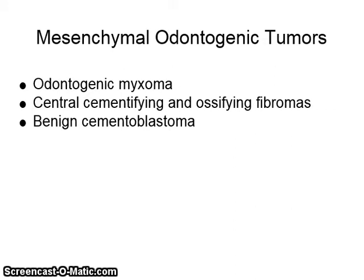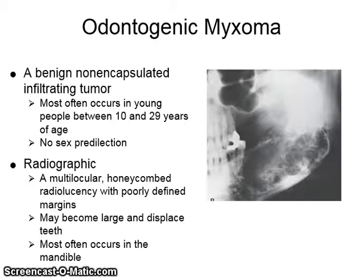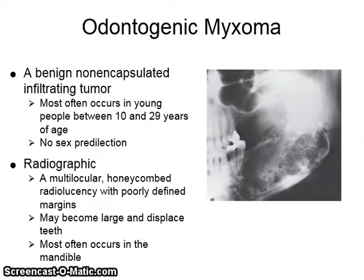Mesenchymal odontogenic tumors include odontogenic myxoma, central cementifying and ossifying fibromas, and benign cementoblastoma. Odontogenic myxoma is a benign, non-encapsulated, infiltrating tumor that most often occurs in young people between 10 and 29 years of age with no sex predilection. Radiographically, it shows as a multilocular or honeycombed radiolucency with poorly defined margins, may become large and displace teeth, and most often occurs in the mandible.